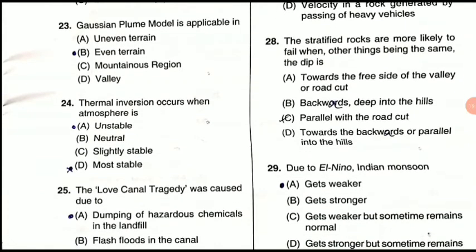Question 24: Thermal inversion occurs when the atmosphere is what? When the atmosphere is extremely stable or more stable, thermal inversion takes place. This is a very frequently asked question and can also come in numerical form.